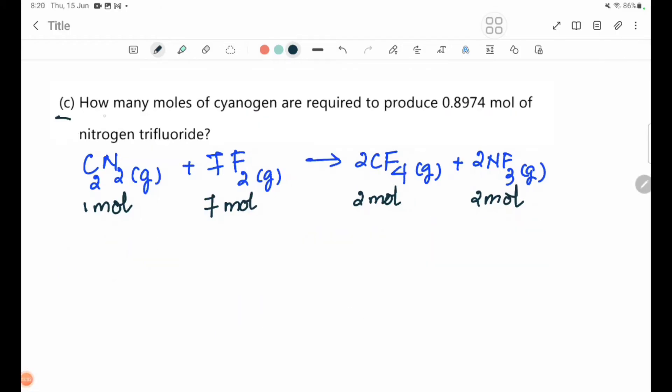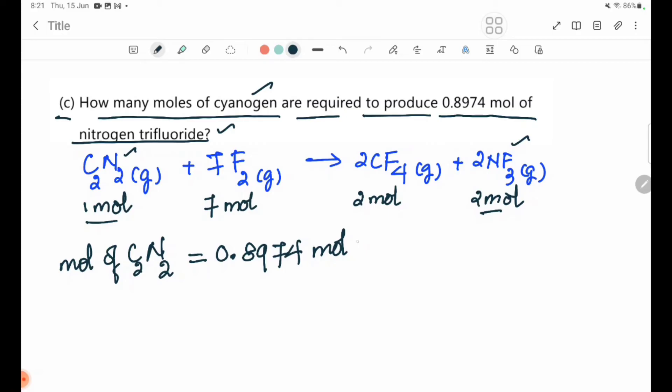Part (c): How many moles of cyanogen are required to produce 0.8974 moles of nitrogen trifluoride? From the equation, 1 mol C2N2 produces 2 mol NF3.